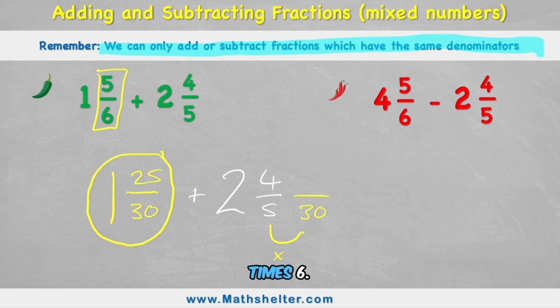5 to 30 is a times 6. Therefore, I need to times my 4 by 6 as well, which is 24. So 24 thirtieths is equivalent to 4 fifths. And my new fraction is therefore 2 and 24 thirtieths.